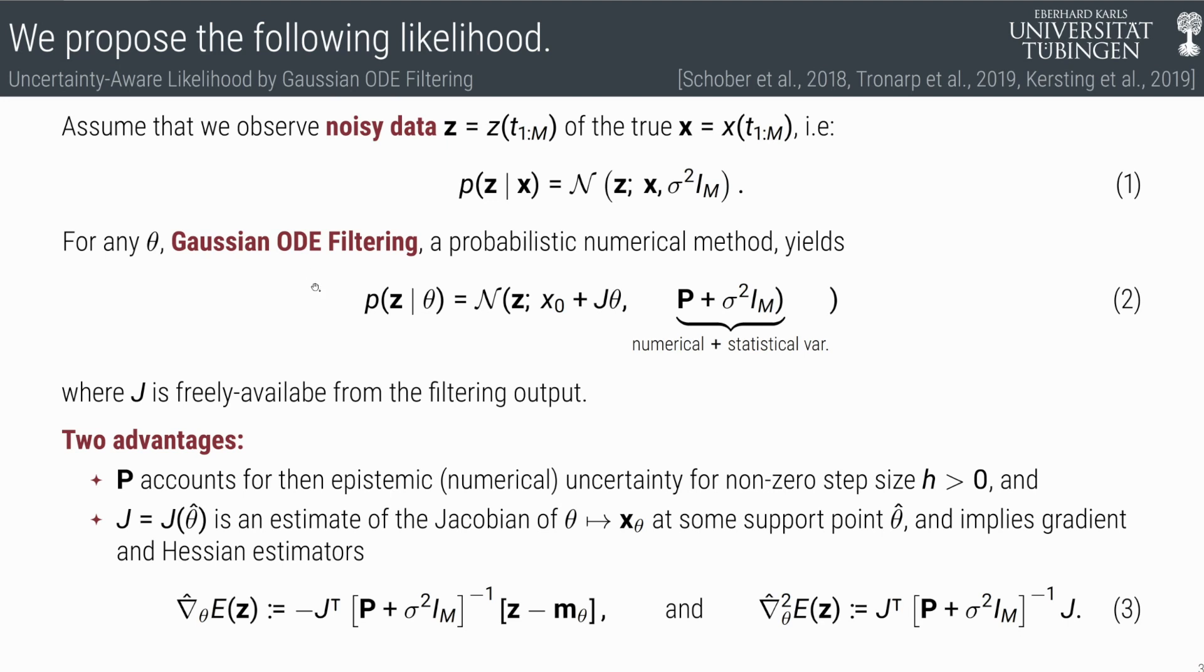If we use probabilistic numerics, we compute the forward map with a tool called Gaussian ODE filtering. This gives us a likelihood which accounts for both the numerical and the statistical variance.